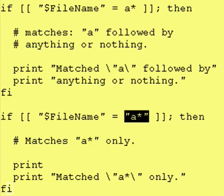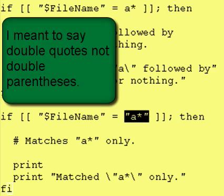So just to recap: you can do exact matches with characters. If you want to do wildcarding and find any single character, use a question mark. If you want to say zero or more characters, use an asterisk. And to use wildcards, the string inside of the test cannot be enclosed in double quotes.